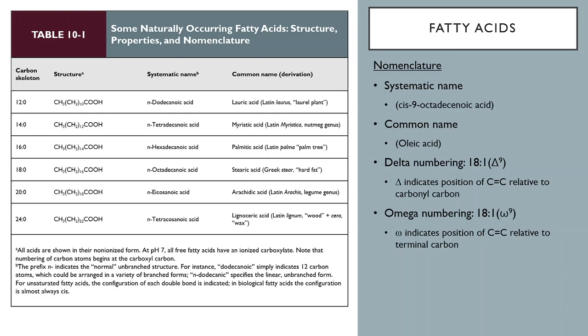Here are more examples of systematic names for saturated fatty acids. Twelve carbons is 'dodeca,' so we call it dodecanoic acid. Fourteen carbons is tetradecanoic acid, and so on. The little 'n' in front of those symbols stands for 'normal' and means the fatty acid is unbranched and contains no double bonds. 'Icoso' means 20, so the 20-carbon one is icosanoic acid, and 24 carbons is tetracosanoic acid, meaning four plus twenty. You should be able to figure out the structure from systematic names and vice versa.